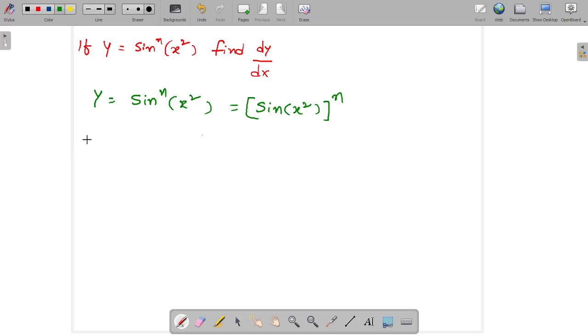So dy by dx equals n into x to the power n minus 1. So it equals n into sin to the power n minus 1 into x squared.